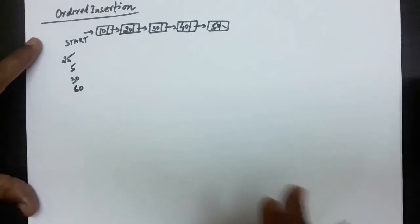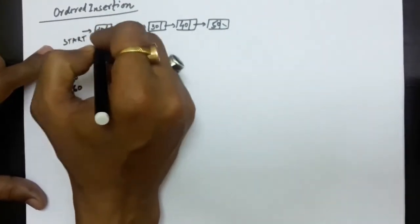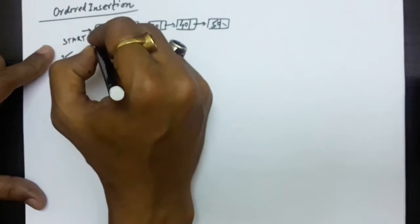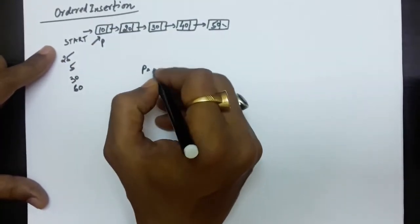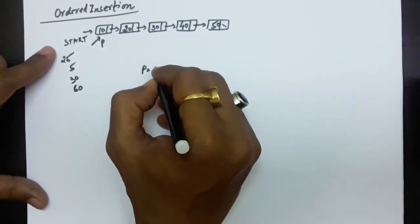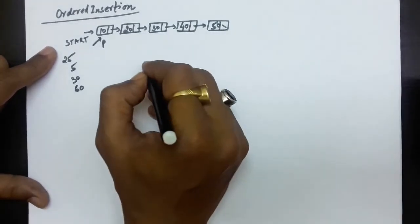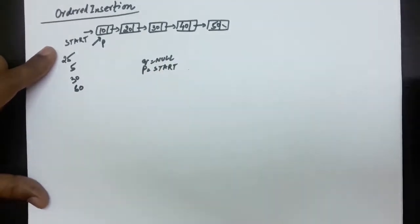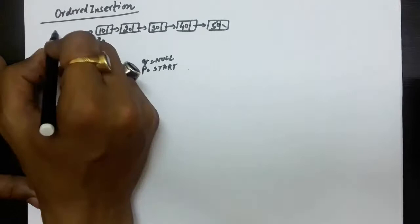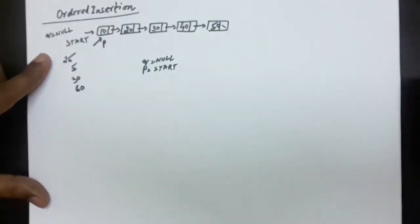Now we have to write the function. Let's say this is the start node. We are taking a pointer P which is also at the first node, so P equals start. We are also taking Q as null, which represents the concept of the previous node. Q is taken as null initially.